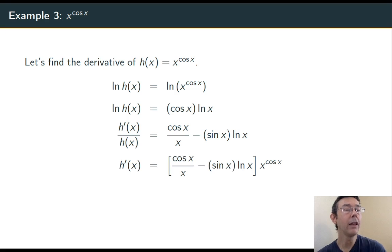And then move the h of x over to the right hand side and rewrite it using its definition x to the cosine x. Overall my final answer here is cosine x over x minus sine x ln of x times x to the cosine x.